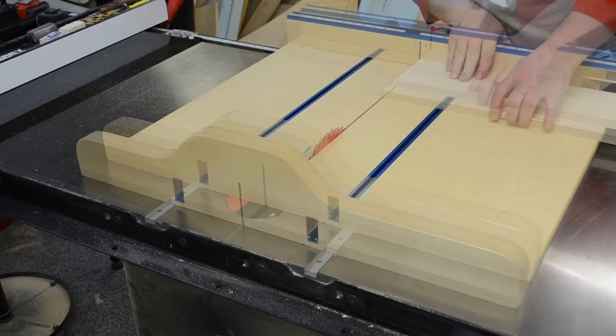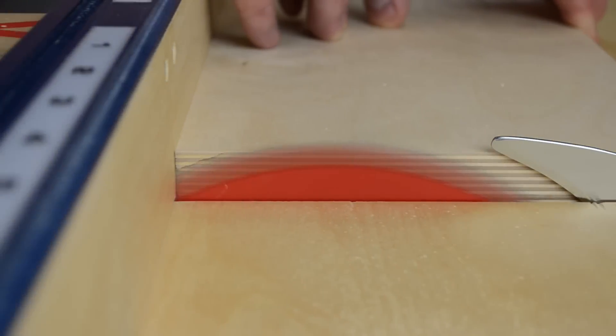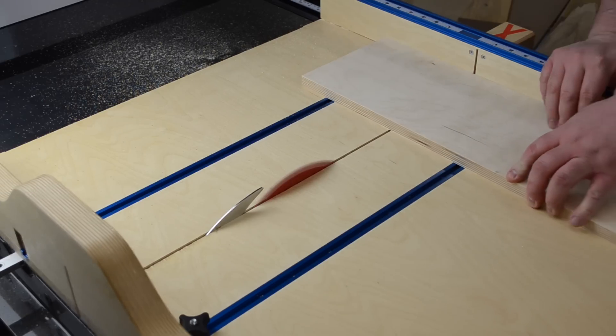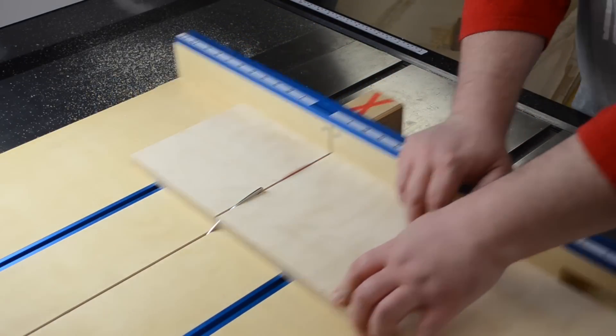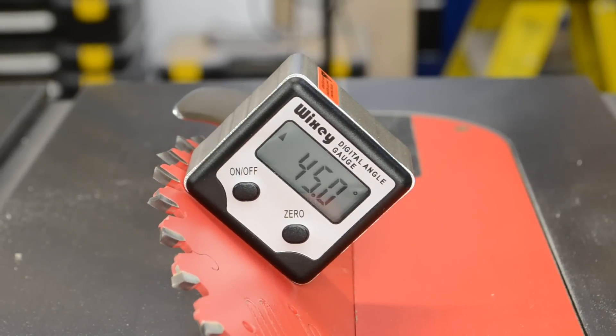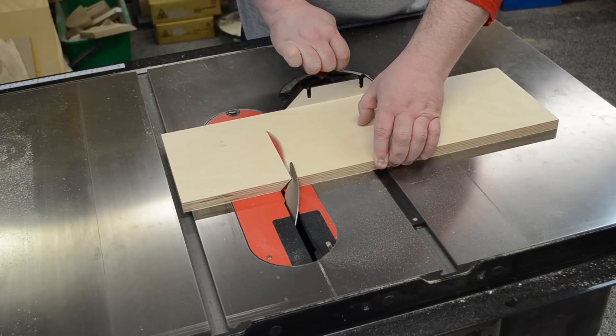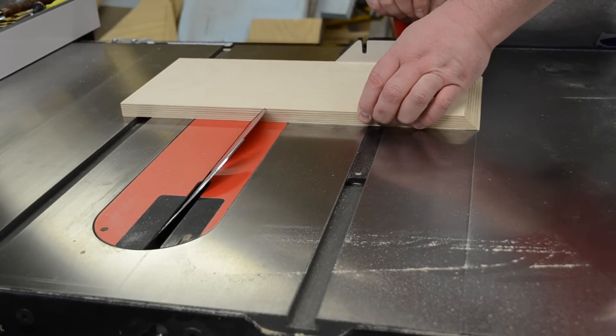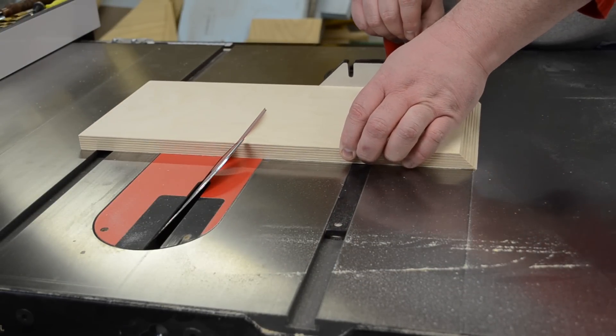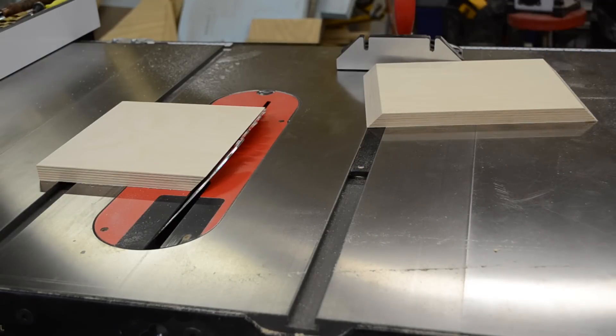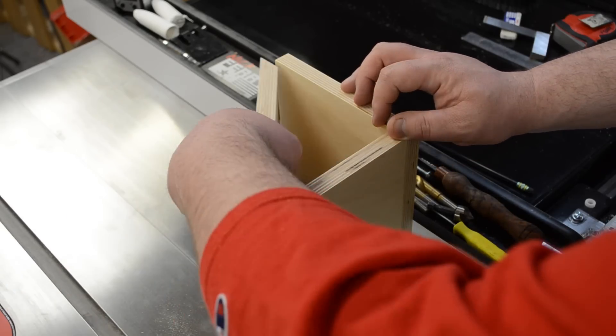Using my table saw sled I could make sure to cut one end nice and square, then I could cut the first piece to length. Tilting my table saw blade to 45 degrees I could then start in on my second piece. It had a 90-degree on one end and a 45-degree bevel on the other. The remaining piece, or the hypotenuse of the triangle, had a 45-degree bevel on each end. I left this piece a little bit long so it could be trimmed to length later.